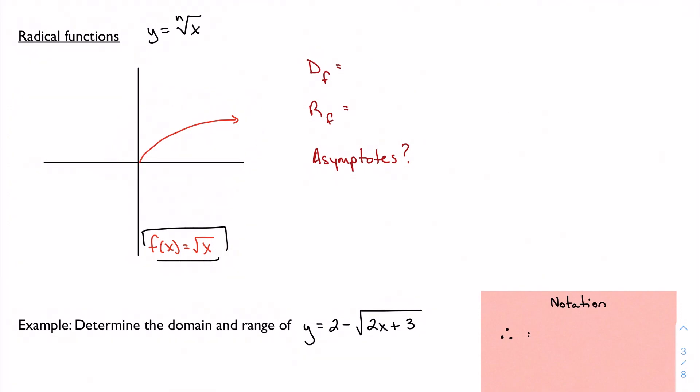And we can see right from it that the domain is just all positive real numbers. So we're just gonna write x such that x is greater than or equal to zero. Because we know we can't take the square root of a negative number. And based on the graph, we actually see the same is true of the range. We see that the function takes on all positive real numbers as its range.